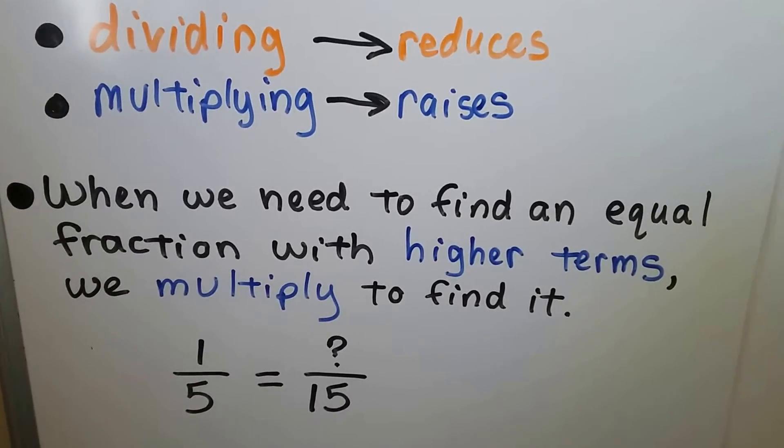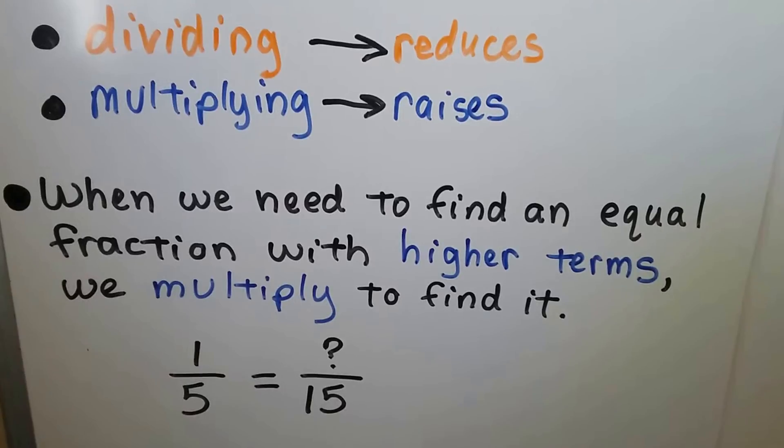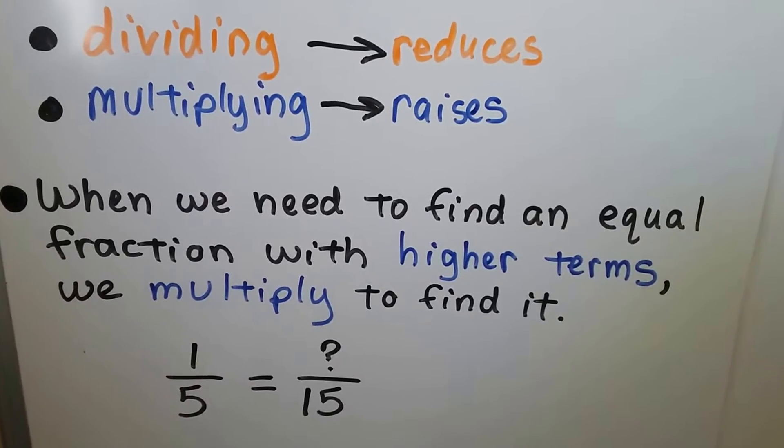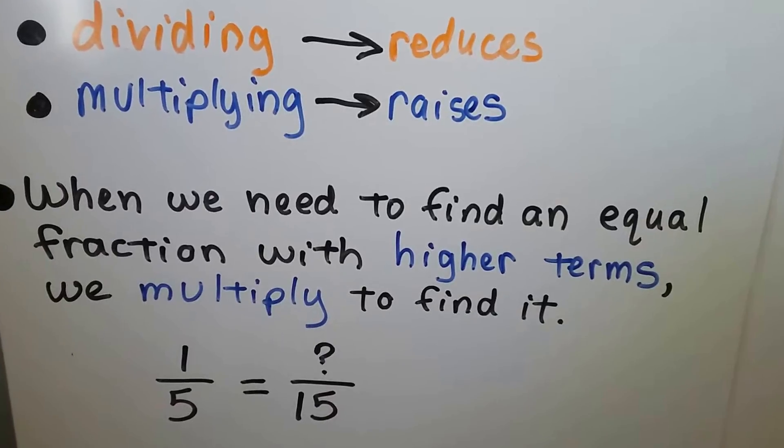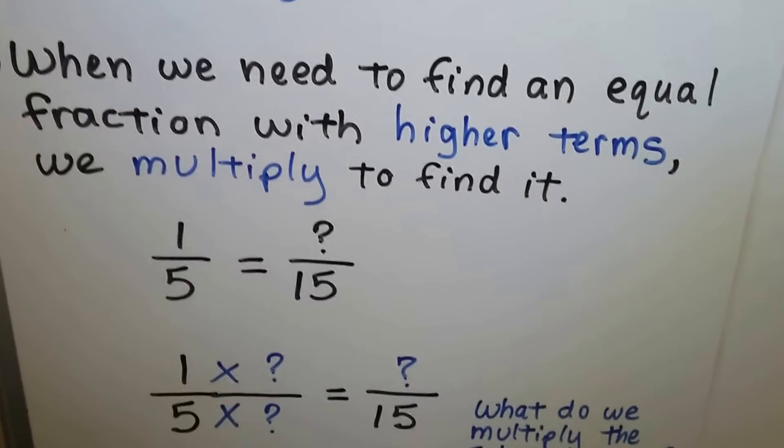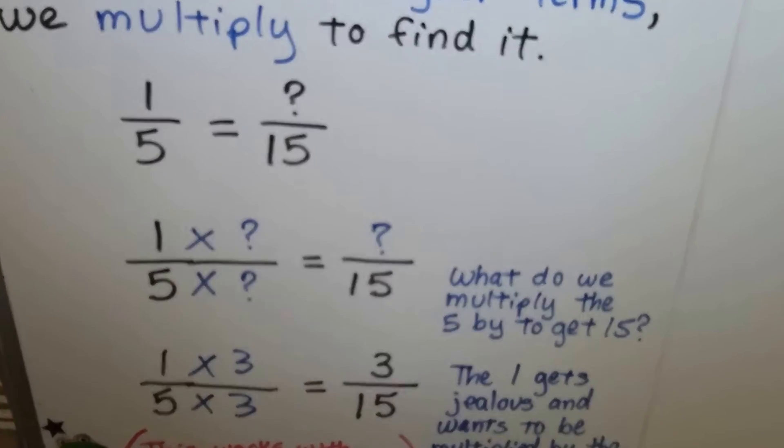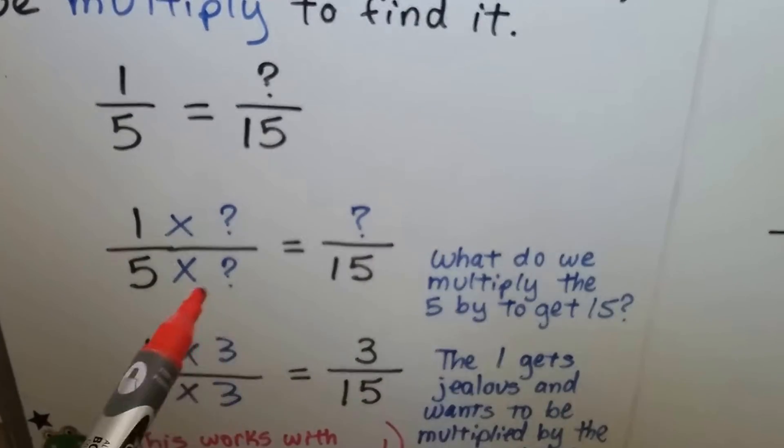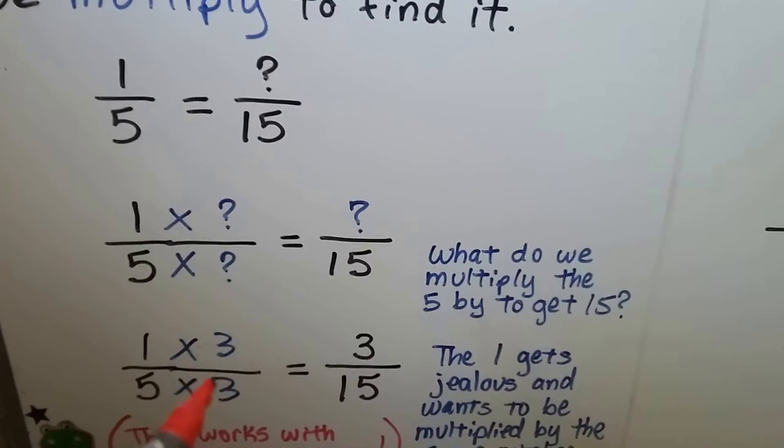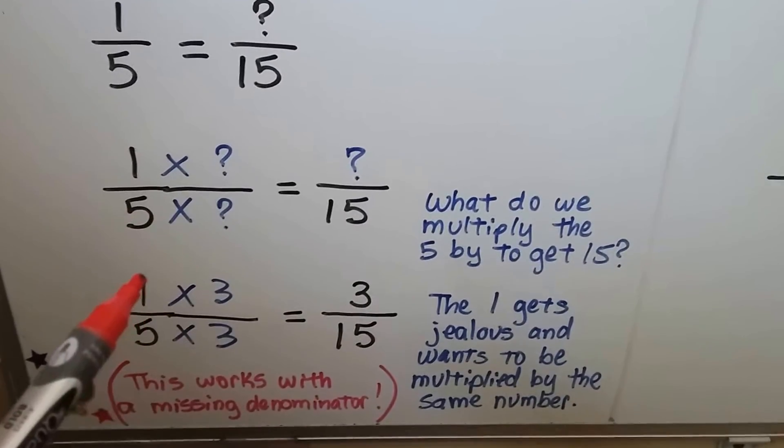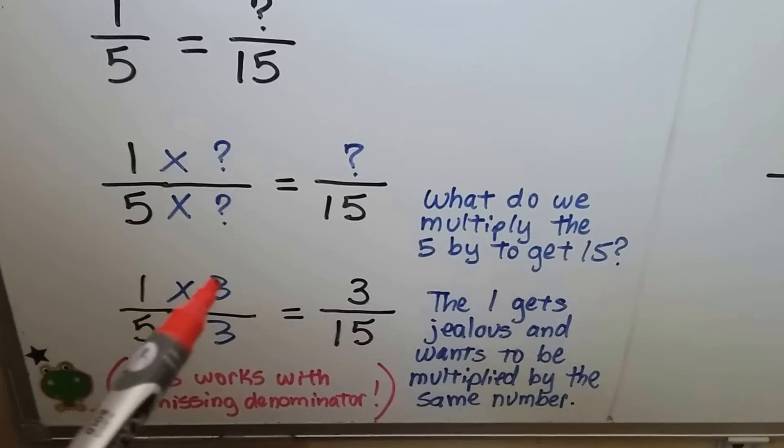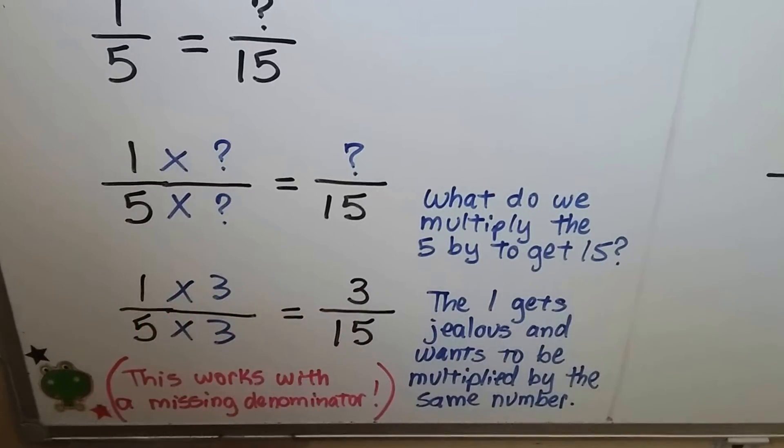If we have 1/5 and it equals some number as a fraction with 15 as a denominator, we don't know the numerator. We ask ourselves, what do we multiply to get that 15? What did we multiply the 5 by to get that 15? A 3. And the numerator gets jealous and wants to be multiplied by the exact same number. So it gets multiplied by a 3, and we get 3/15.